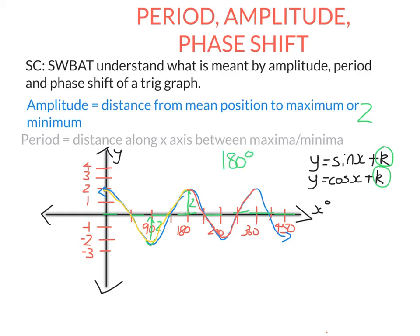Now you need to be careful because the period will change depending on whether or not x is in degrees. Here x is in degrees, so that's why the period was 180 degrees. But of course, if we put this in radians, the period would be pi radians. Remember that 180 degrees and pi radians are the same thing. So that's what period and amplitude means.